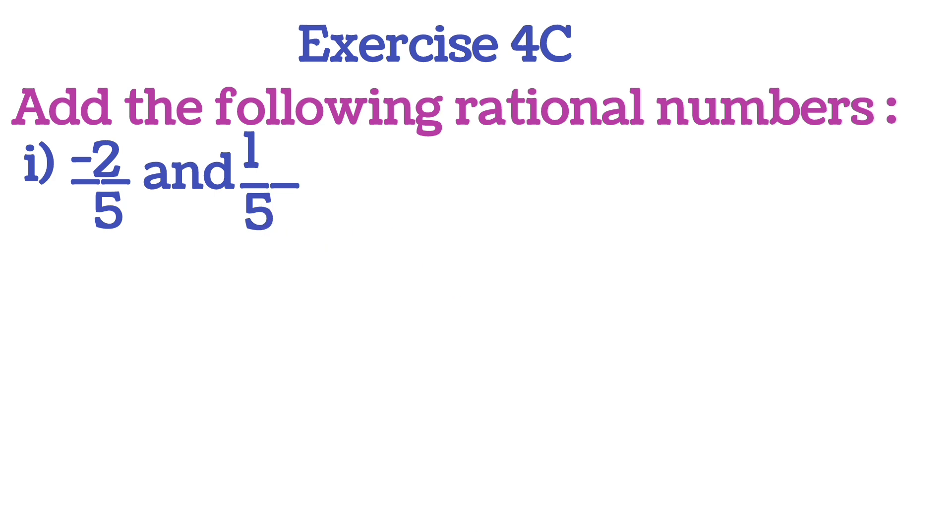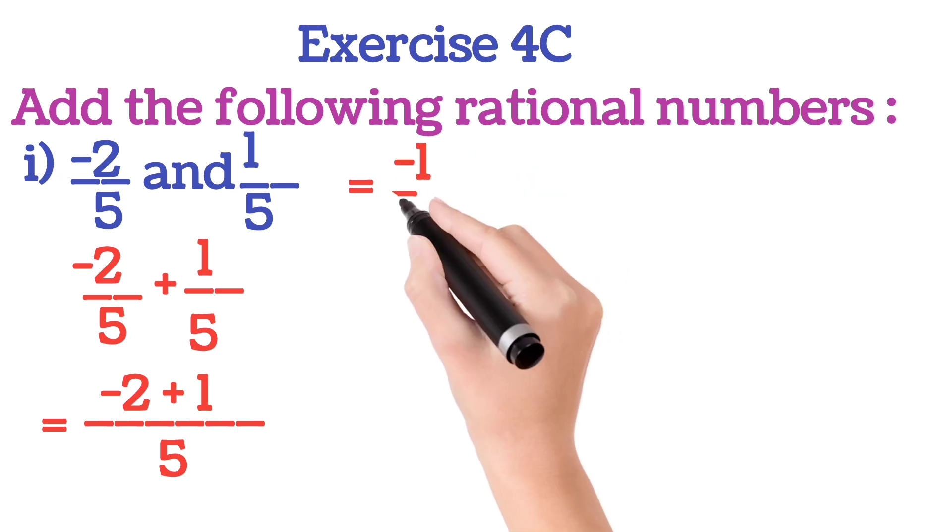Both the denominators are equal, so simply you write the sum this way: minus 2 by 5 plus 1 by 5. Both denominators are 5, so simply you write minus 2 plus 1 by 5. One is negative and one is positive, so you will do subtraction and minus sign is with bigger number. So our answer is minus 1 by 5. Is it clear?